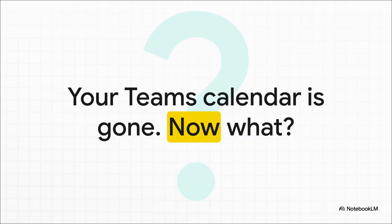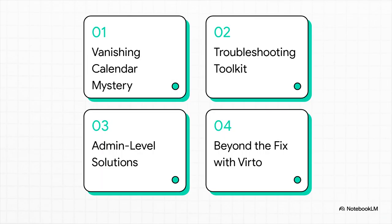So there you are, staring at the screen. Your workflow is grinding to a halt and you're probably wondering how you're even supposed to join your next meeting. It's a super common problem, but here's the good news — it is almost always fixable. Here's our game plan: first, we're going to play detective and figure out why the calendar disappears. Then I'll give you a toolkit of fixes you can try right away. After that, we'll talk about the heavy-duty solutions for your IT admin. And finally, we'll look at how to prevent this whole mess from ever happening again.